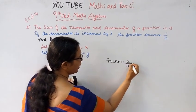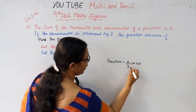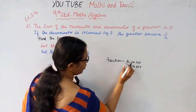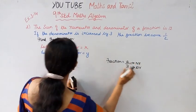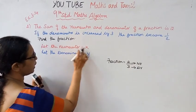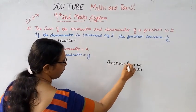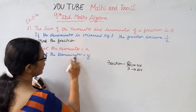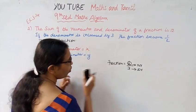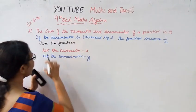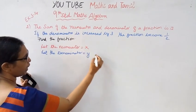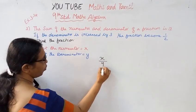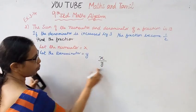For example, 2 by 3 - this is the numerator and denominator. Let the numerator be x and the denominator be y. The fraction is x by y.